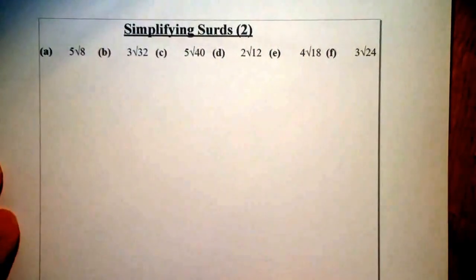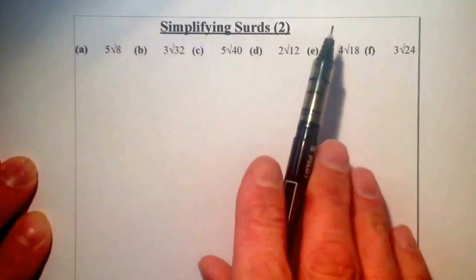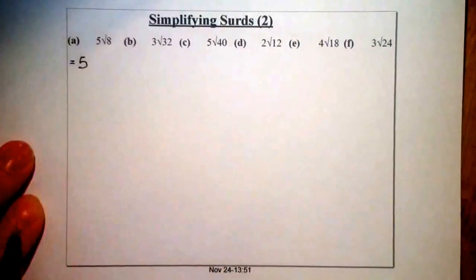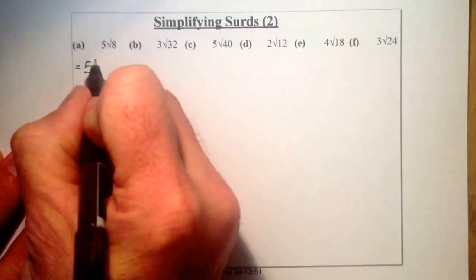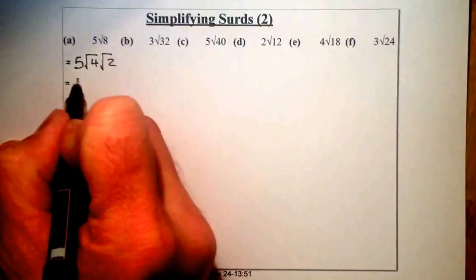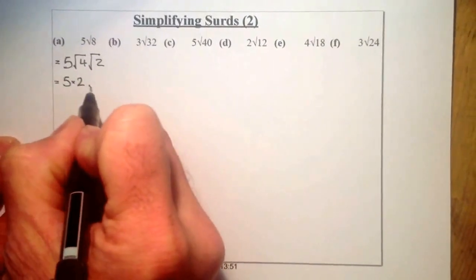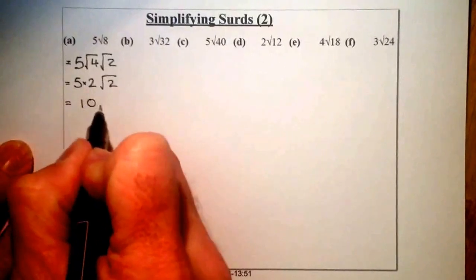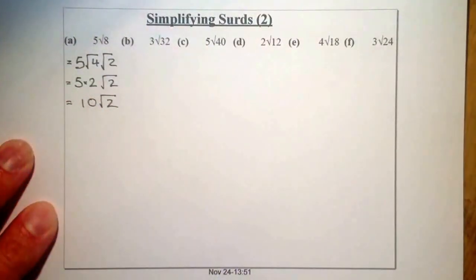In part 2, I have some different questions: instead of just a root, there's a number in front of the root. For 5 root 8: similar to above, I have 5 outside the root. I split root 8 into root 4 times root 2. From there I have 5 times 2 times root 2. Multiplying the two numbers outside the root together gives an answer of 10 root 2.